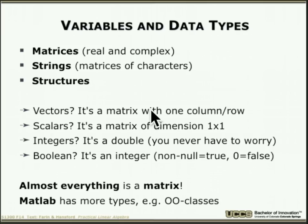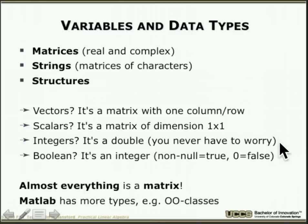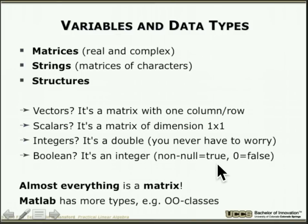In MATLAB, everything is fundamentally a matrix. Vectors are matrices with one row or one column. A scalar like the number 7 is a 1×1 matrix. Integers are actually doubles — a 1×1 matrix. Booleans: true or false is really an integer, which is really a double. Anything non-zero is true; zero is false.